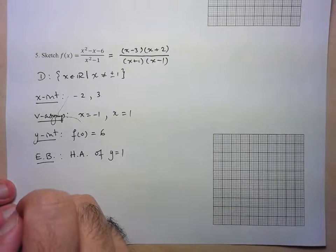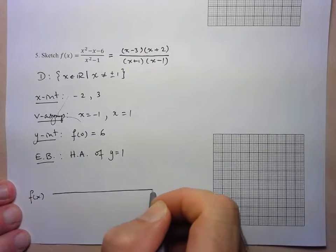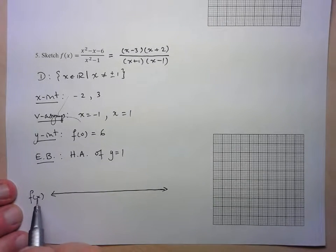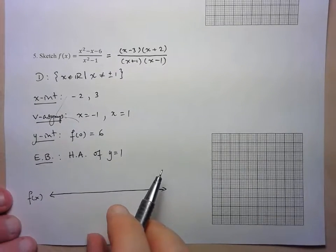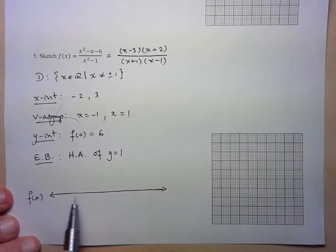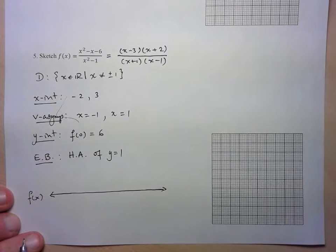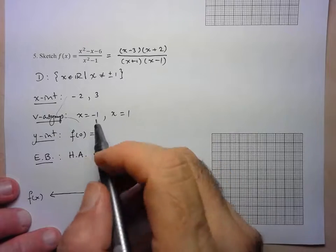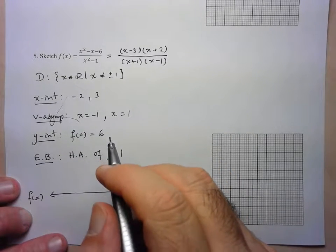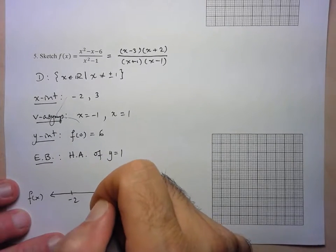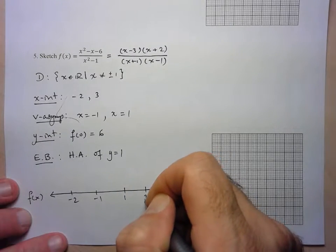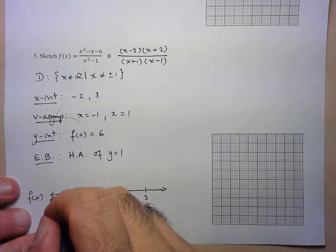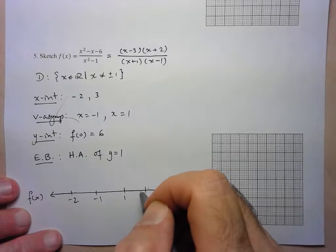To help put everything together, we'll determine the sign of the function. I use f(x) to show we're finding the sign of the y-values. On the number line, we mark all places where the function can change sign — the x-intercepts and vertical asymptotes — in order: -2, -1, 1, and 3. We check one value in each interval since the sign can't change within an interval.